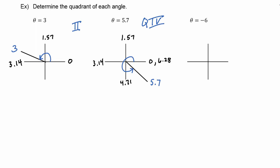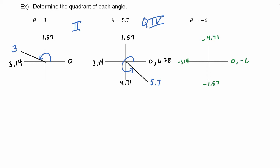For theta equals negative 6, we label in the negative direction: 0, negative 1.57, negative 3.14, negative 4.71, and negative 6.28. Our angle falls between negative 4.71 and negative 6.28. Here is the rotation, and theta equals negative 6 lands in quadrant 1.